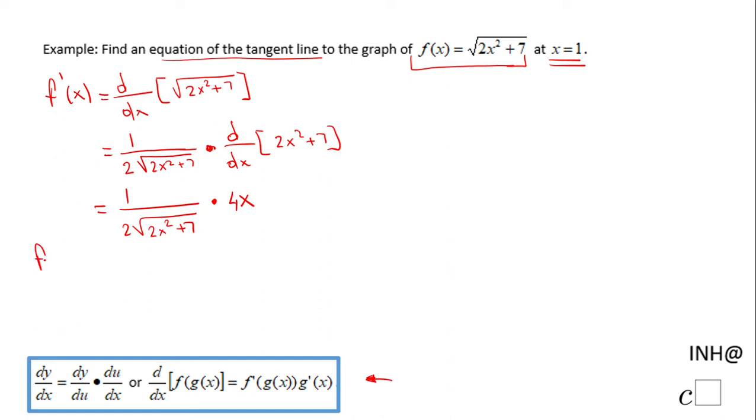So we're going to just plug 1 in it. So we have 1 over 2 times square root of 2 times 1 squared plus 7, times 4 times 1. So we just replace x equals 1. Of course like I said we can do this simplification here if you want. We can do it right now. And then what do we get? We get 1 over square root of 9 times 2, and overall that will be 2 over 3. So the slope of the tangent line will be 2 over 3.